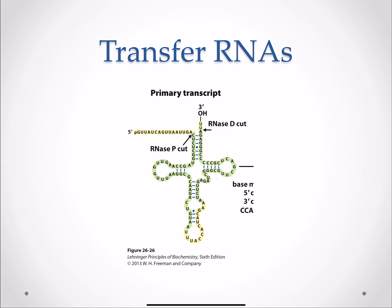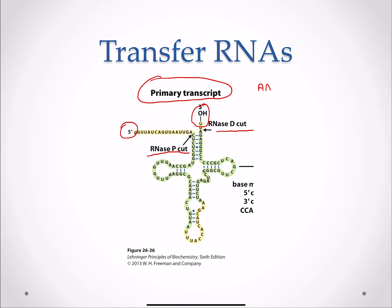Our transfer RNAs are going to look like this cloverleaf structure. A few things have to happen with this primary transcript. At the 5' end, you have a very long sequence that needs to be removed. RNase P is going to remove that long 5' end. You're also going to have to remove the 3' end — the UU — because that's not helpful for bringing in the amino acids. RNase D is going to cut that off. Amino acids come in to the 3' end, so you need to prepare that 3' end for amino acid addition.